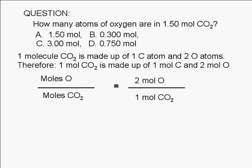We can rearrange this equation to solve for the moles of oxygen atoms. Essentially, what we end up doing is multiply the given number of CO2 molecules, 1.50 moles, by the ratio of two moles of oxygen over one mole of carbon dioxide. The ratio serves as a conversion factor.